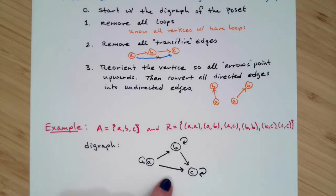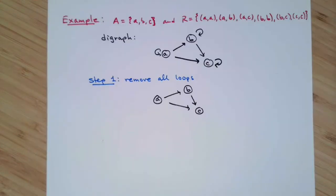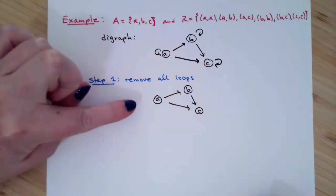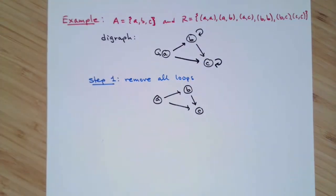Then the next thing we do is we're going to remove all of our loops. In this example, when we remove all the loops, since it's such a small example to start with, we've actually removed half of the edges, half the arrows that were in our digraph. This now would be the picture after the first step of removing all the loops.